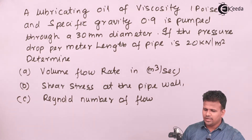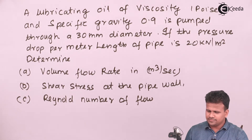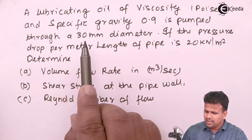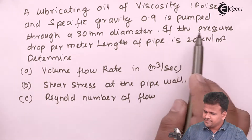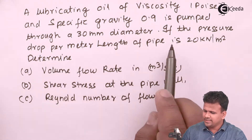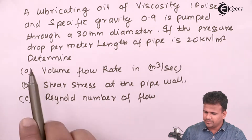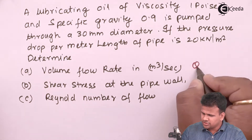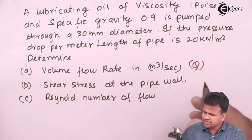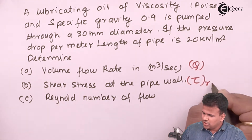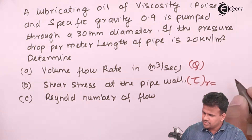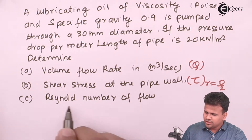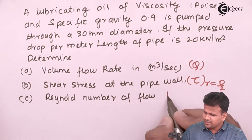A lubricating oil of viscosity 1 poise and specific gravity 0.9 is pumped through a 30 mm diameter pipe. If the pressure drop per unit length is 20 kilonewton per meter square, we have to determine the volume flow rate Q, the shear stress at the pipe wall τ at r = D/2, and the Reynolds number of the flow.